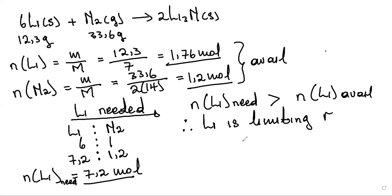If the moles needed were less than the moles available, the reactant would be the excess reagent. In this case, nitrogen gas is the excess reagent because you have more than you need — you'll still be left with some nitrogen gas after the reaction. Now that we know our limiting reagent, let's look at the next question.